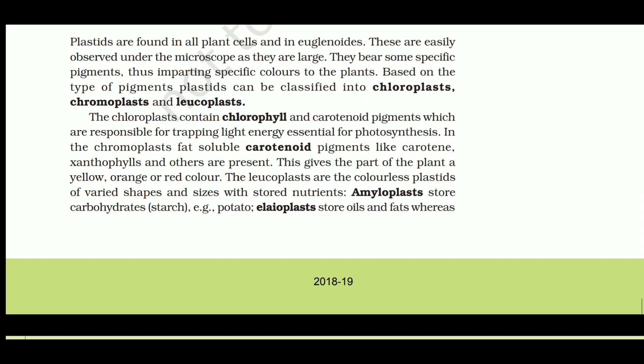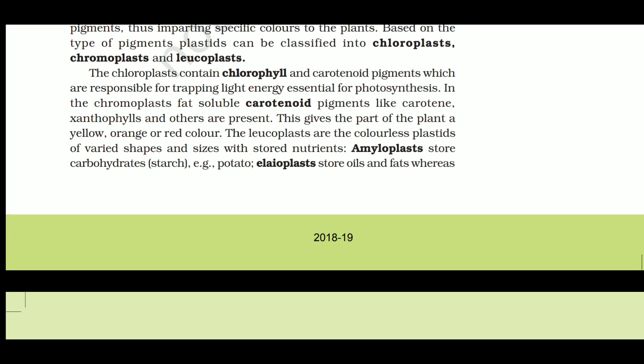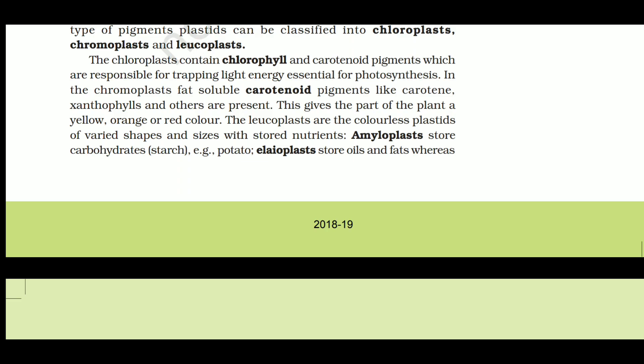Based on the type of pigments, plastids are classified into: chloroplast (chloro = green, containing chlorophyll), chromoplast (any color), and leucoplast (white/colorless). The chloroplast contains chlorophyll and carotenoid pigments responsible for trapping light energy for photosynthesis. In chromoplasts, fat-soluble carotenoid pigments like carotene and xanthophylls are present, giving plant parts yellow, orange, and red colors.